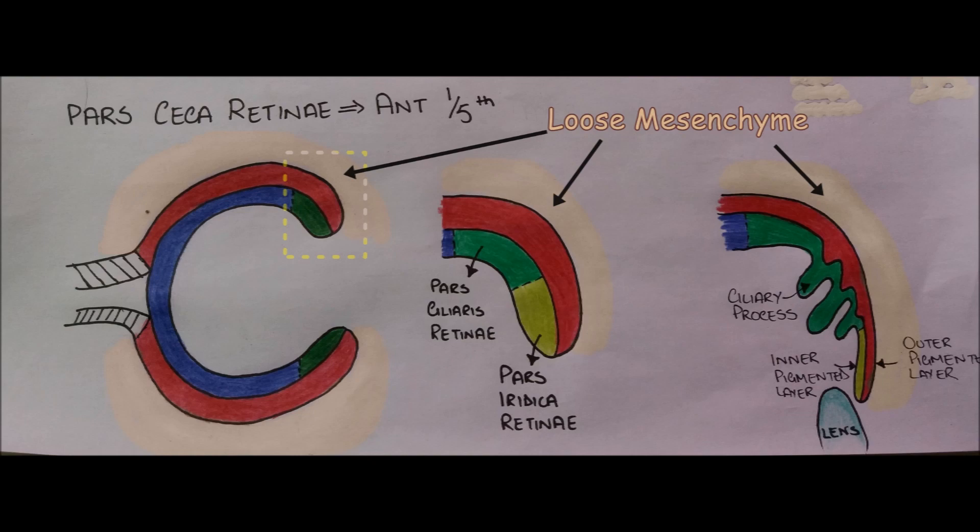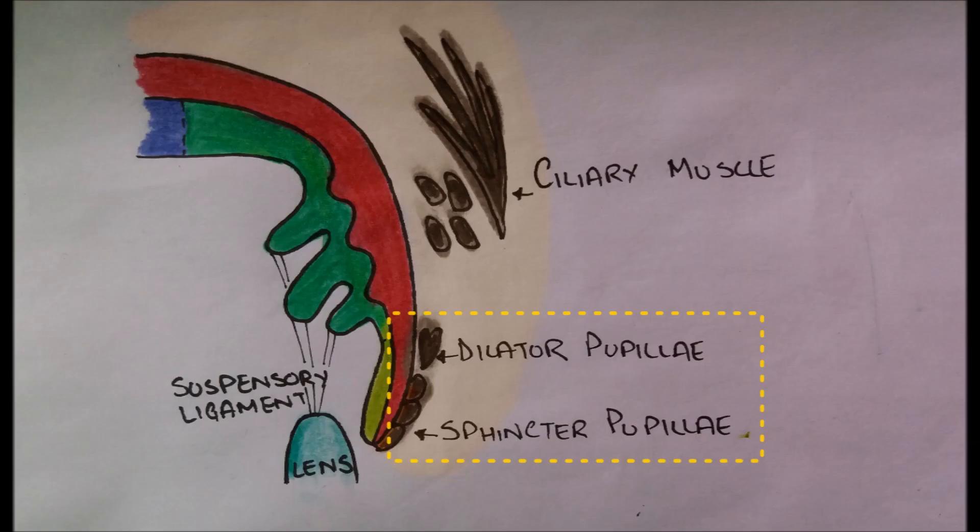The region surrounding the Optic Cup is filled with loose mesenchyme. Within this loose mesenchyme, dilator and sphincter pupillary muscles originate from the ectoderm of the optic cup while the ciliary muscle originates from the loose mesenchyme.